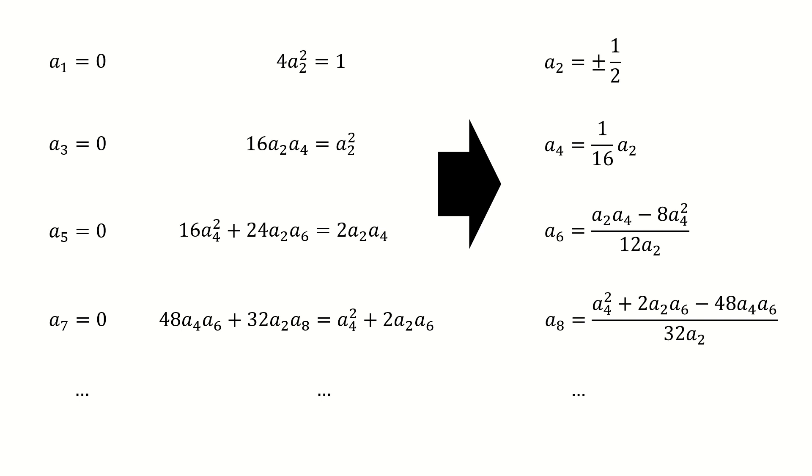So you can see for a4, it depends on a2. And for a6, it depends on a2 and a4. And for a8, it depends on a6, a4, and a2. So the first thing is to solve the a2. But here we got a2 equals to plus or minus 1 half. So we need to determine the a2 is positive or negative first.